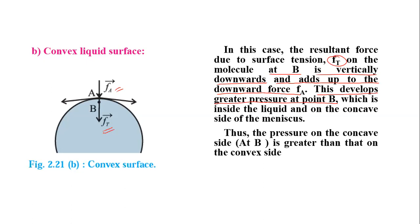Point B is on the concave side. Therefore, pressure on the concave side is greater than the convex side, so pressure at B is greater than pressure at A.